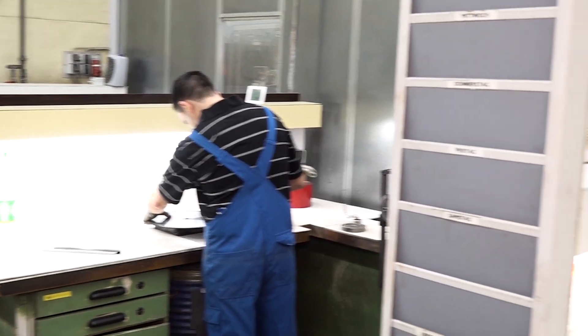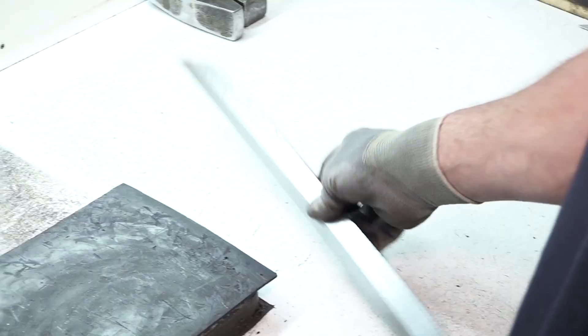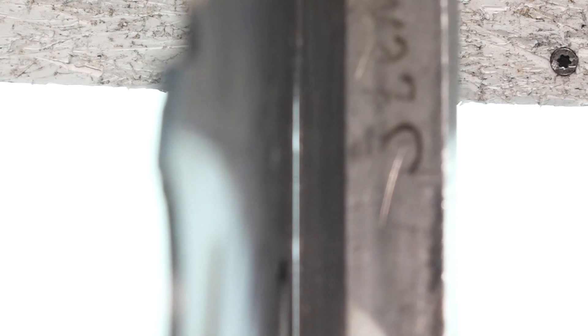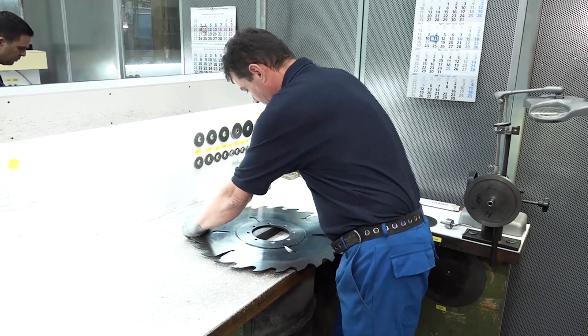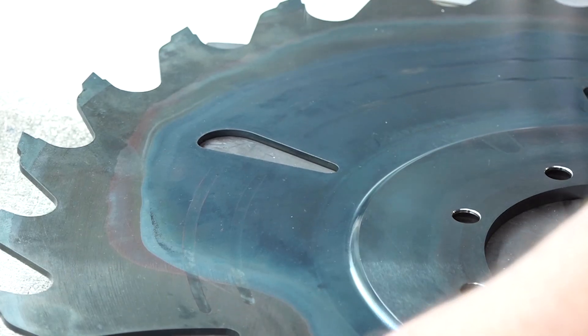At this stage, the tool is not yet flat enough to withstand the use in the sawmill. Therefore, the first step is to check the unevenness with a straight edge. At the subsequent straightening stage, these unevennesses are removed by targeted hammer blows.